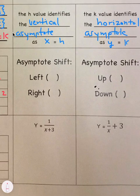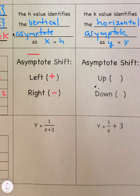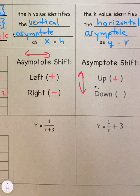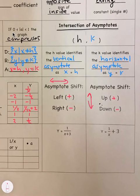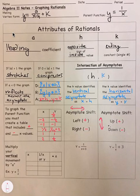Asymptote shift. So remember, opposite. So when it's moving left, it's plus, right is minus. So this is asymptote shift left and right. This is asymptote shift up and down. Plus stays the same. Minus stays down. So same as before.